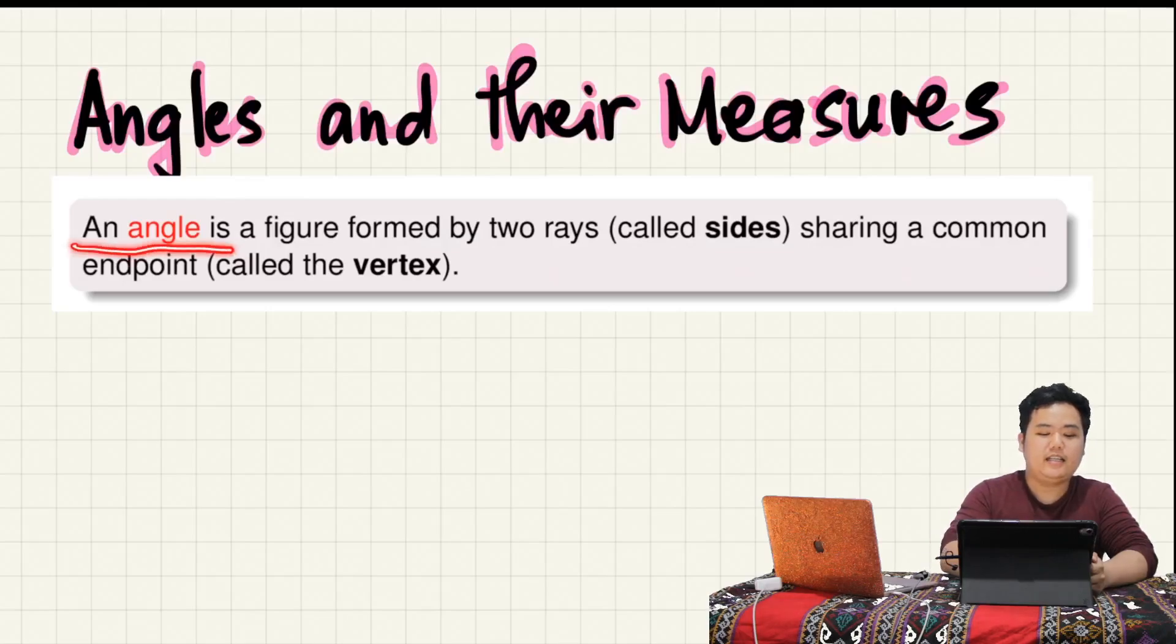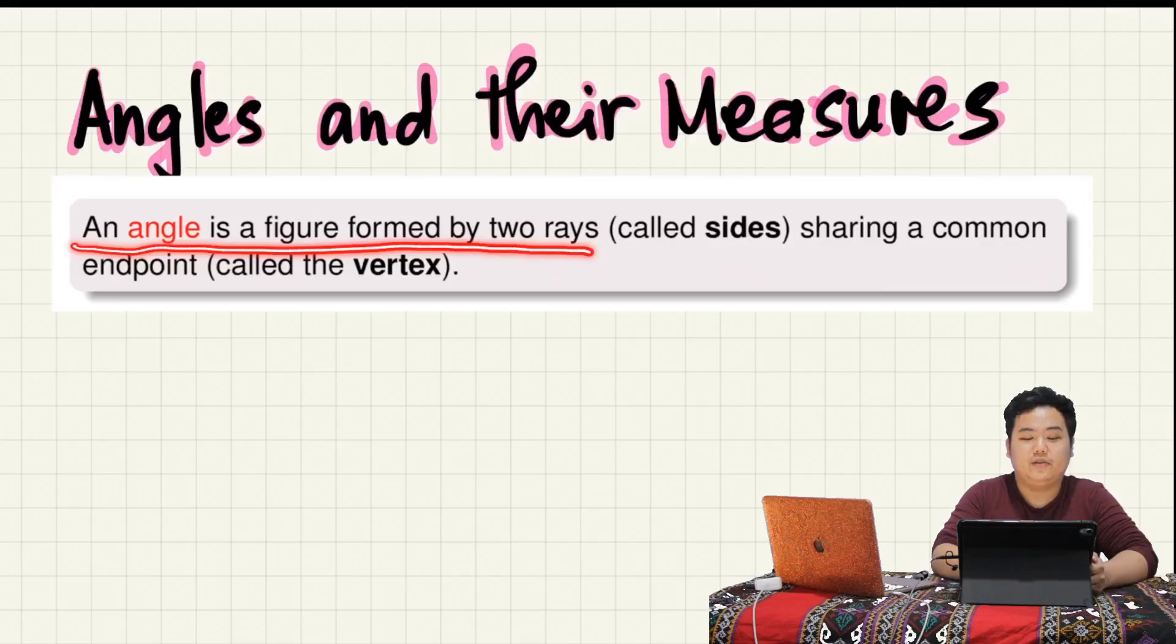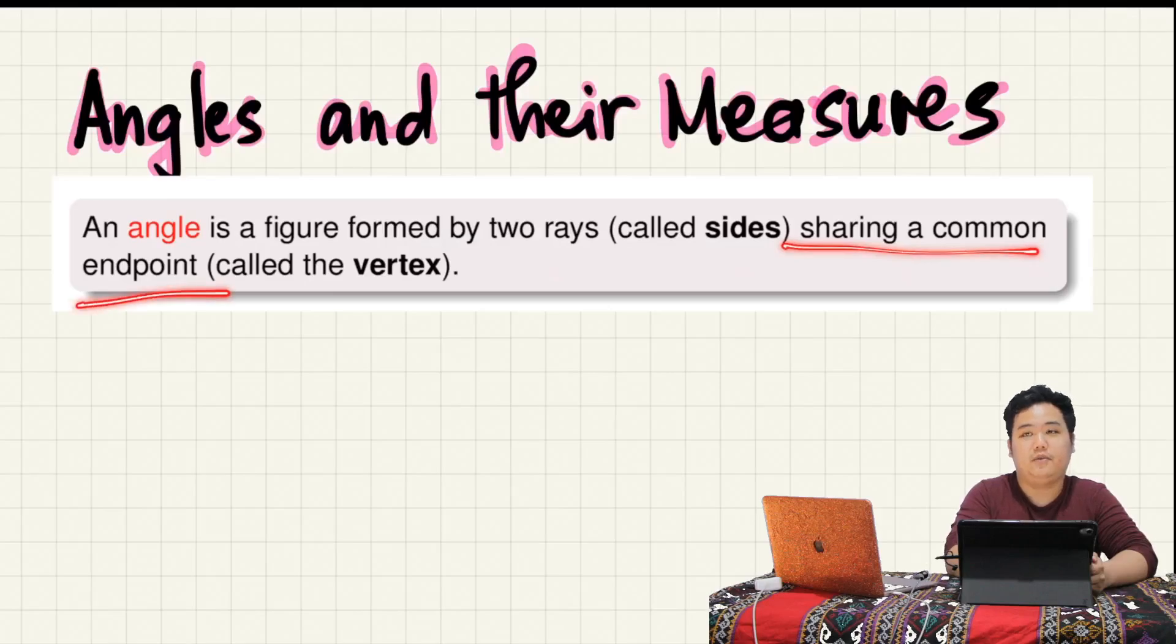Let us begin by defining what an angle is. An angle is a figure formed by two rays, and we call those two rays the sides, which share a common endpoint.